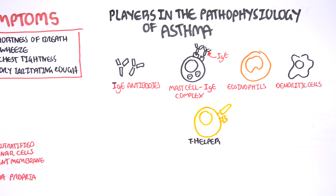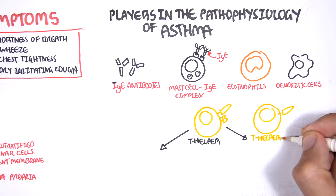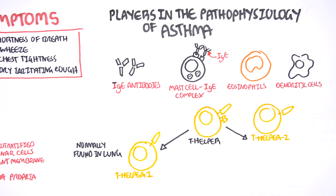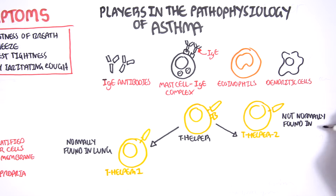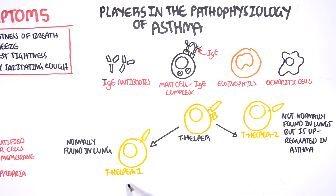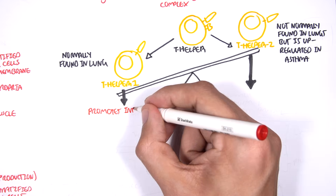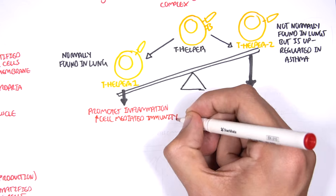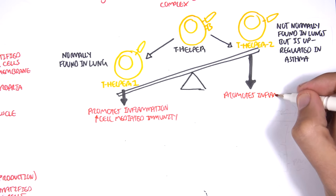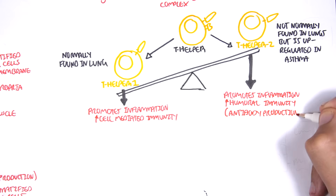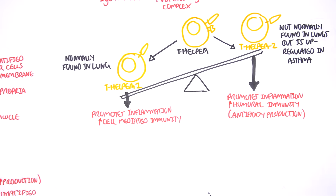There are two main types of T-helper cells: T-helper 1 and T-helper 2. T-helper 1 cells are normally found in the lungs. However, in asthma there is an imbalance — T-helper 2 cells, which are not normally found in the lungs, are upregulated in asthmatics. T-helper 1 normally promotes inflammation through cell-mediated immunity, whereas T-helper 2 promotes inflammation by increasing humoral immunity, promoting antibody production.